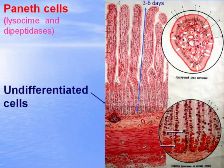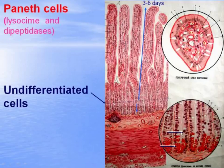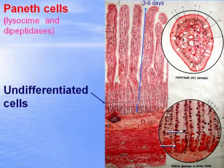Paneth cells are located at the bottoms of crypts; they are called cells with acidophilic apical granularity. They produce lysozyme enzyme, which digests the bacterial wall, and also dipeptidases, which digest short peptides — dipeptides — to amino acids. These enzymes are released into the lumen of crypts and then into the lumen of the intestine.